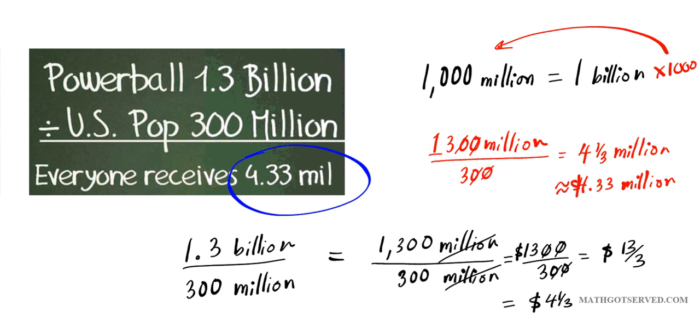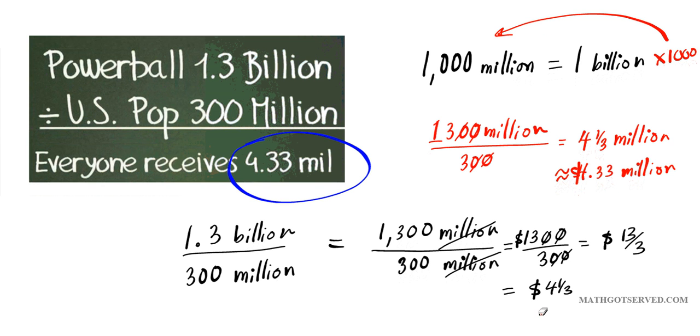And if we want to write that in decimal form, that is approximately 4 dollars and 33 cents. So, if 1.3 billion is the figure for the jackpot payout and is divided amongst 300 million, the entire U.S. population, everyone will get 4 dollars and 33 cents, not 4.33 million.